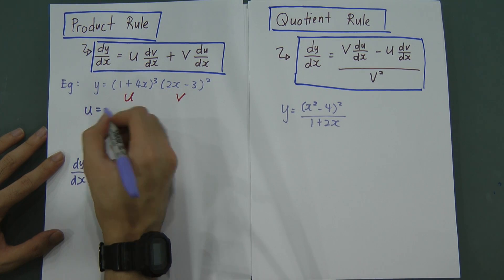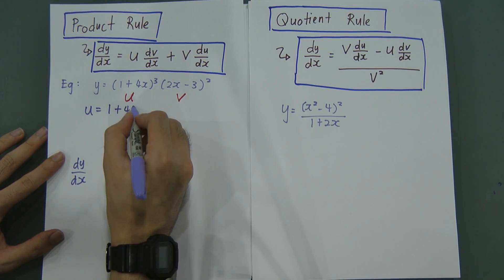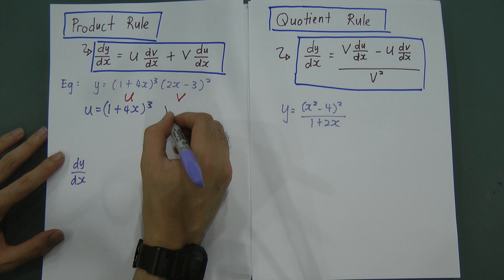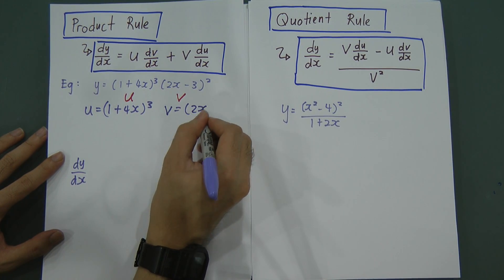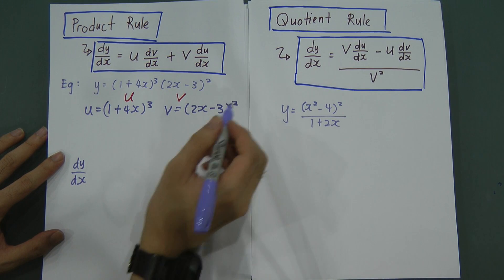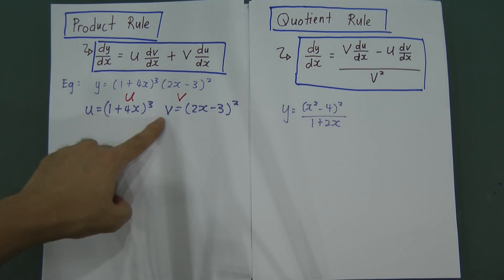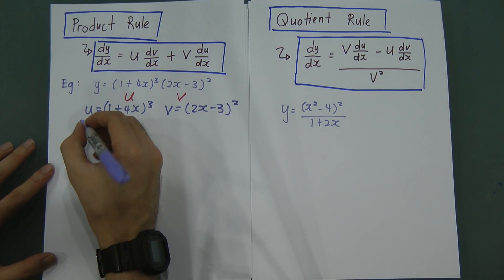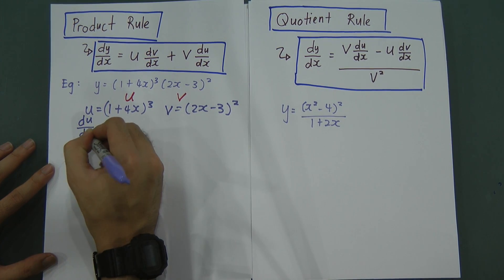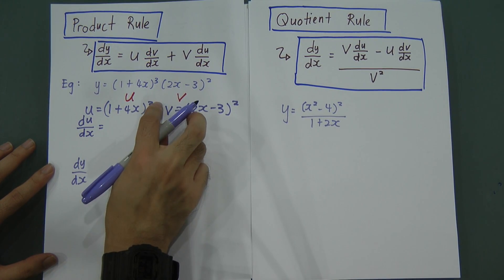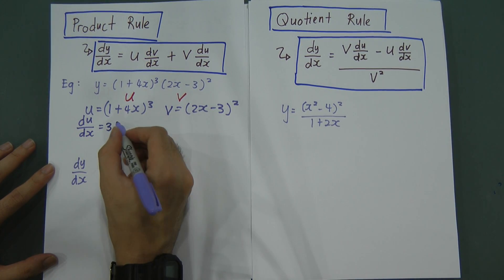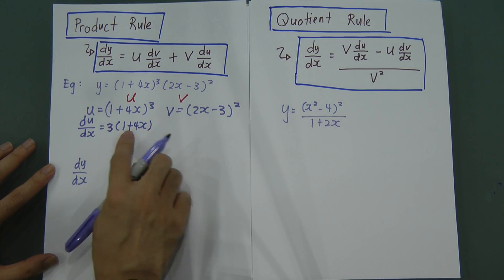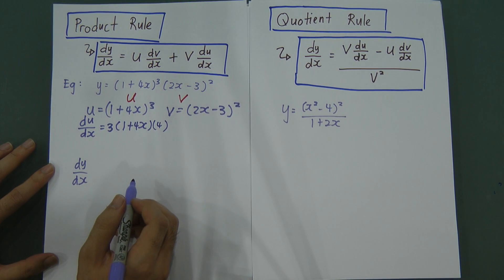If I let U equal to (1 + 4X)³, then I differentiate U with respect to X, which we call du/dx. To differentiate this, we move the 3 in front, giving us 3(1 + 4X). Remember, you also have to differentiate the inside one more time — the derivative of 1 + 4X is 4.